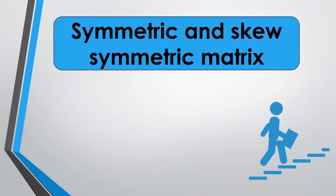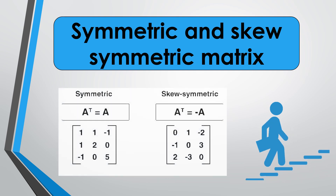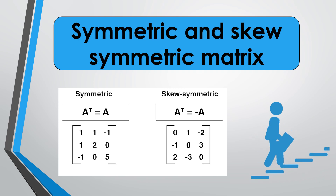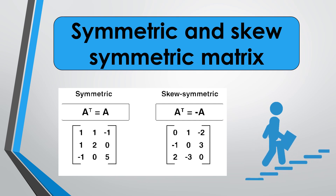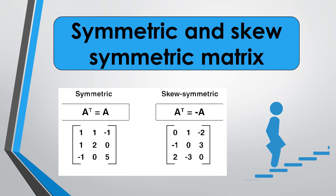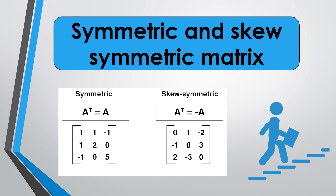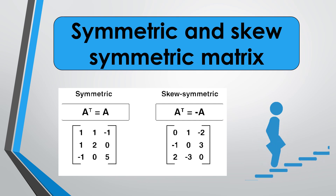A symmetric matrix and skew symmetric matrix are both square matrices. The difference between them is that a symmetric matrix is equal to its transpose, whereas a skew symmetric matrix is one whose transpose is equal to its negative. If A is a symmetric matrix, then A equals A transpose. And if A is a skew symmetric matrix, then A transpose equals negative A.